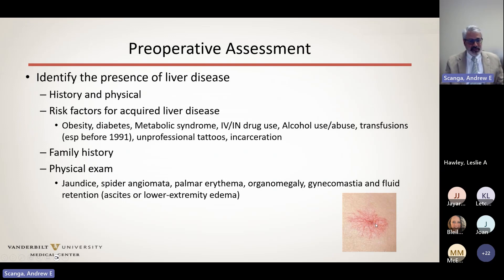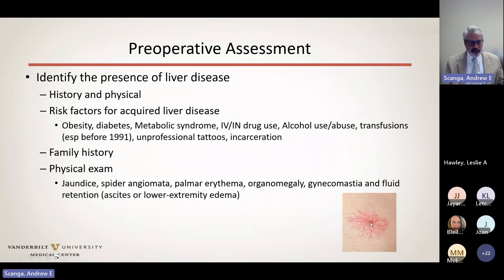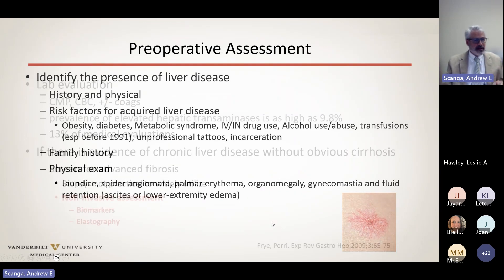Spider angiomas can sometimes be subtle. They generally occur in high estrogen states — you can see them during pregnancy or on hormonal therapy — but cirrhosis and pregnancy are the most common times you'll see these spider telangiectasias, where there's a central arteriole that blanches and fills peripherally from center outward when you press on them. Then you're going to do lab evaluation — a CMP and CBC. Coags are not necessarily always routinely checked, but if you're concerned about liver disease, you'll want to check coags.